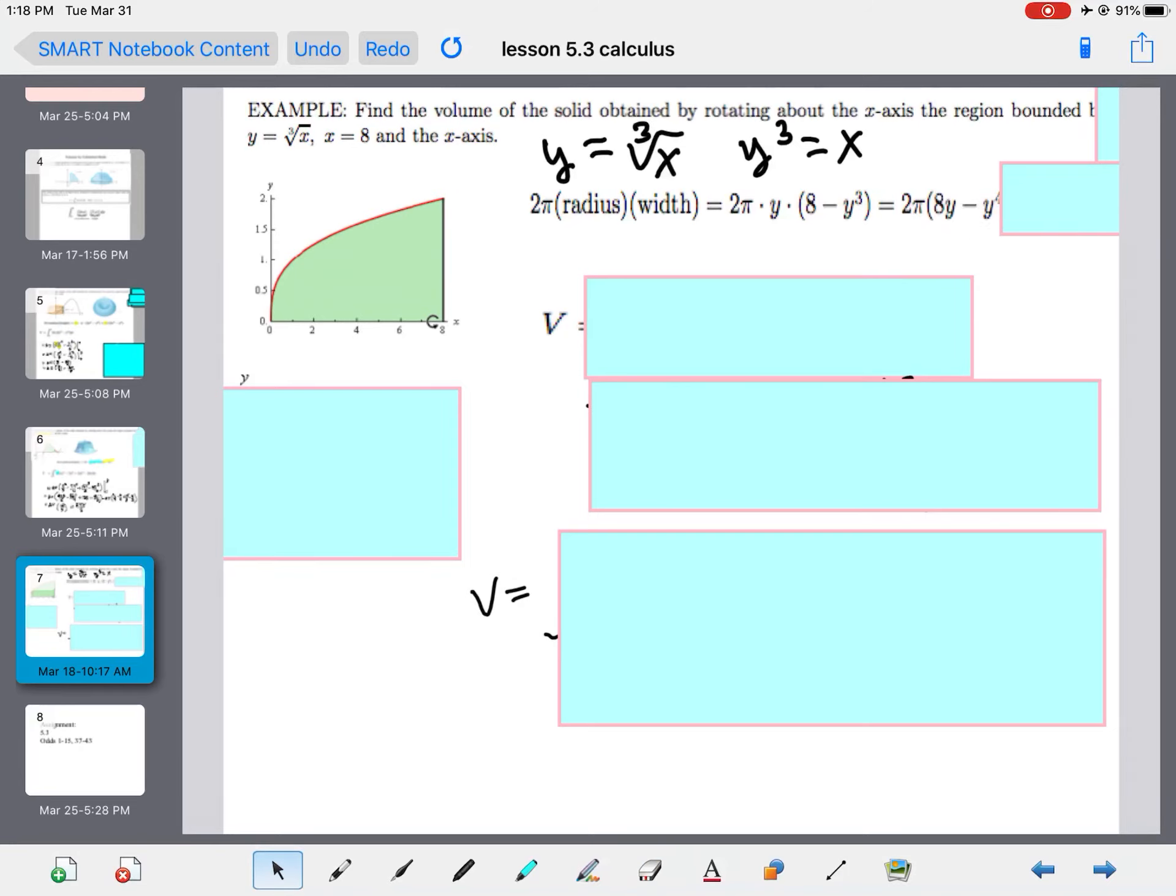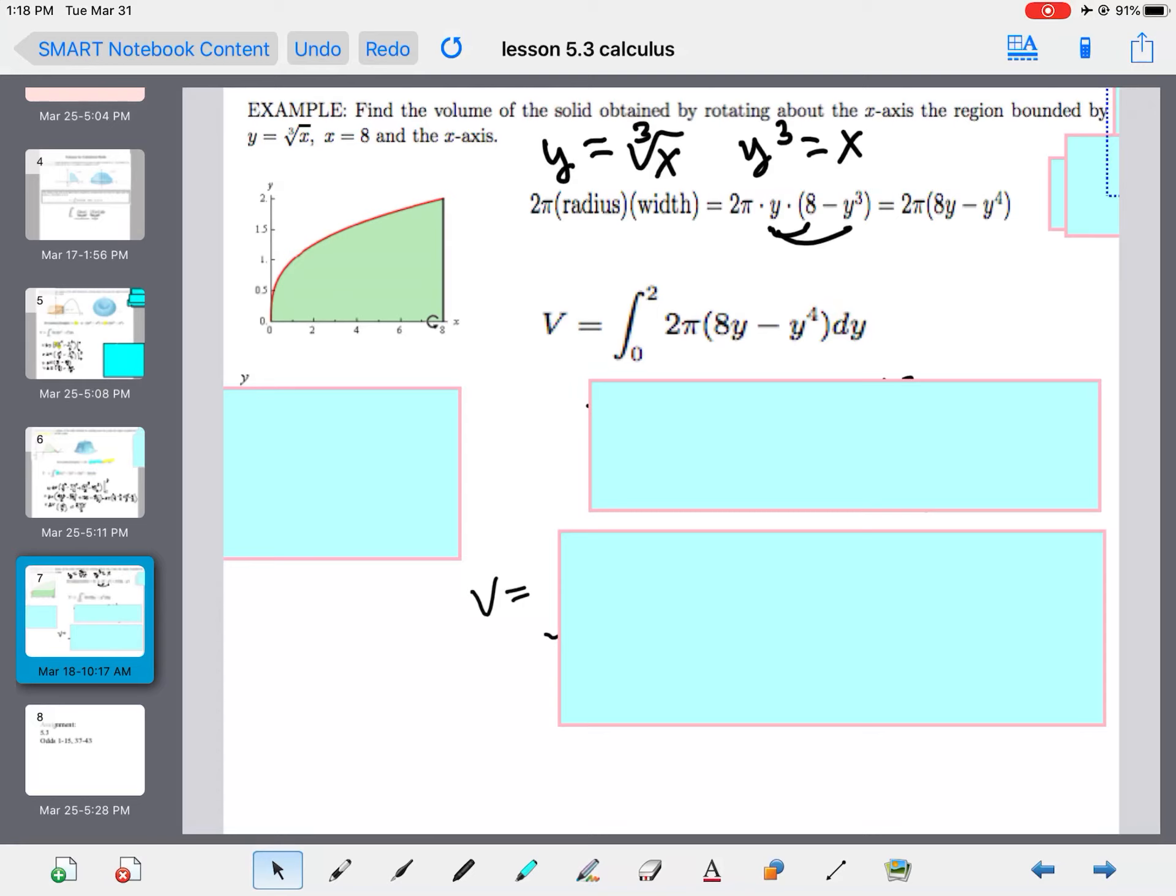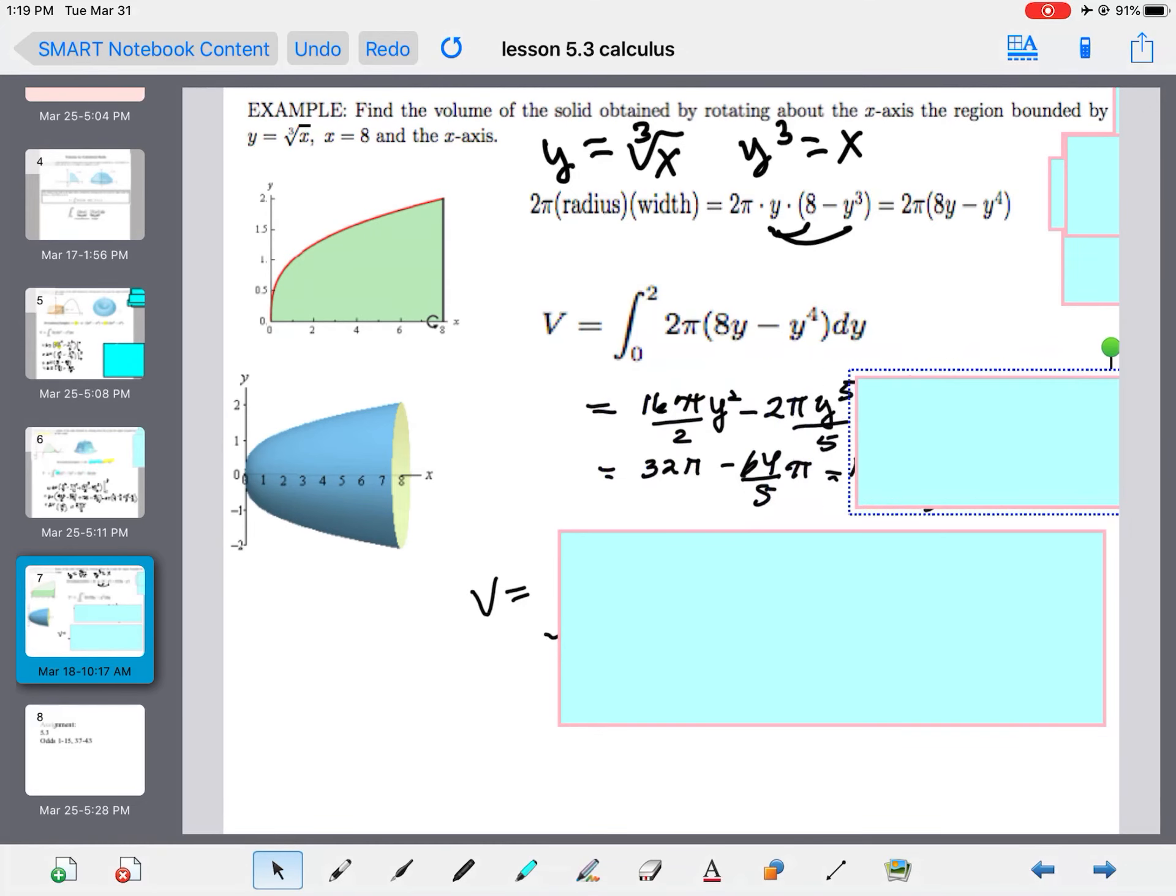So, then we've got to get it ready to integrate. So, I would distribute this y into both things. You get 2 pi times the quantity of 8y minus y to the fourth. We're going to do that from this time. The y heights. The cube root of 8 is 2. So, our heights go from 0 to 2. So, that is the setup of our integral. Here's what the picture looks like if we rotate it. It kind of looks like a thimble or something. And then, we're going to take the general anti-derivative, leave your 2 pi out in front. Well, this time I distributed the 2 pi. You can do it either way. And we get 8 pi y squared minus 2 fifths pi y to the fifth. We stick in 2. We stick in 0. We get 96 pi over 5.